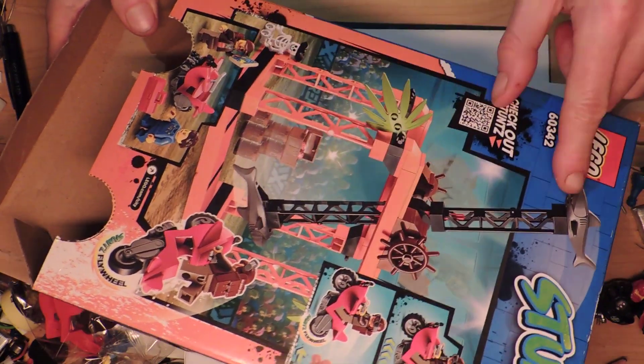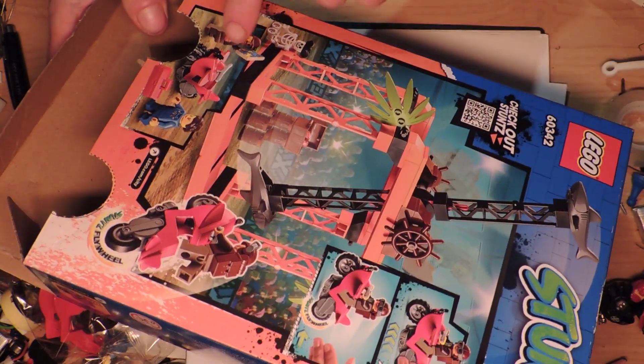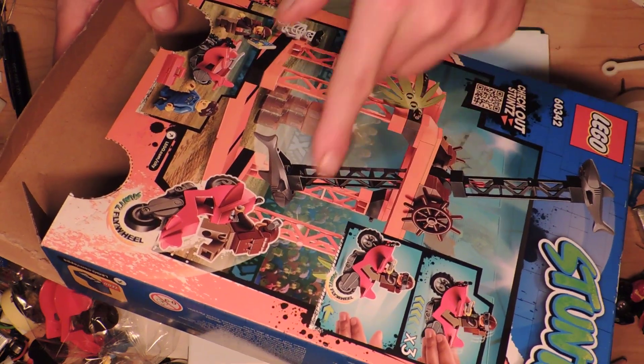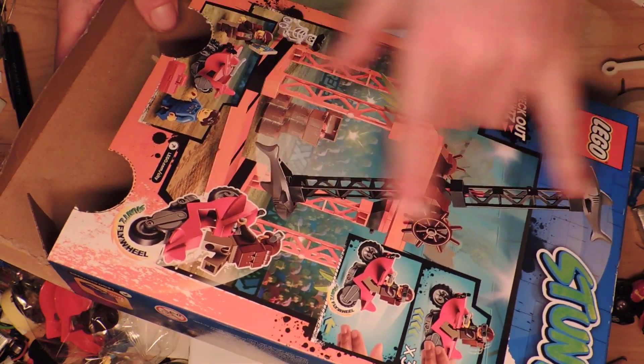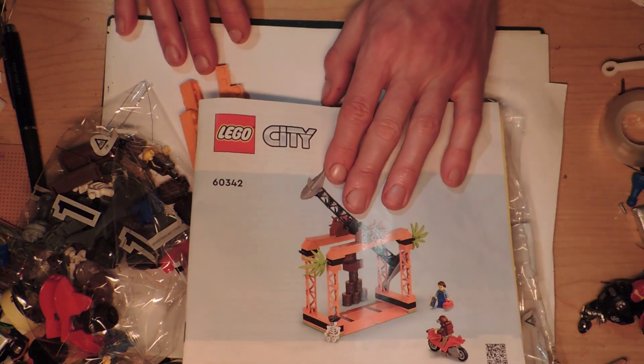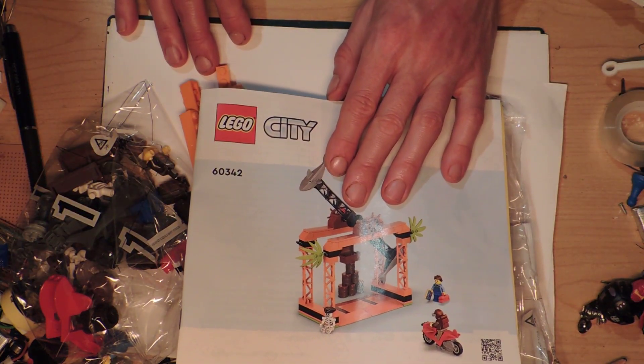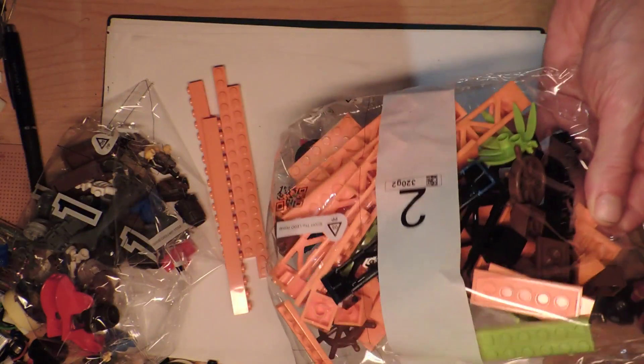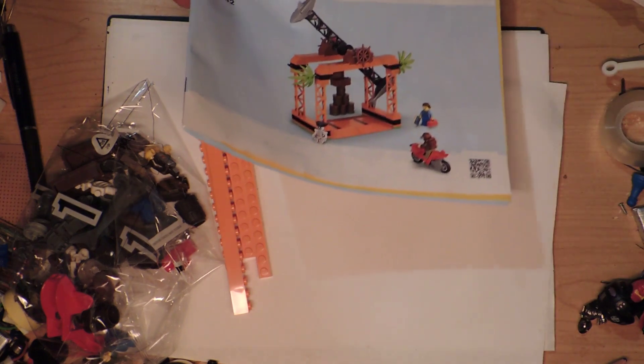There's two sharks, skeleton, person, person, person, interesting motorcycle and lots of like girder type pieces. That's not the right word. What is the right word? I don't know. I'm not a technic person. So we'll just do bag number one, let's get it out of the way.